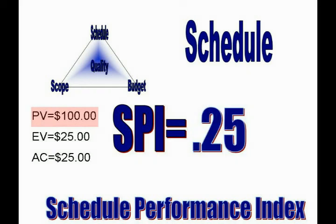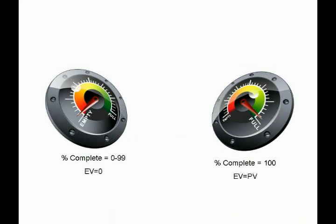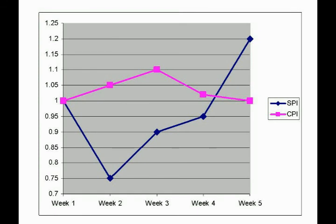The key to using the SPI to give an accurate snapshot of schedule performance requires implementing rules for recognizing value. I'm an advocate of the 0-100 method, where a task has no earned value until it's complete, and you wouldn't include an incomplete task in your SPI calculation unless it was past due. This gives a more accurate snapshot of the current schedule of the project. I'll go into rules for when to recognize value in a future video.